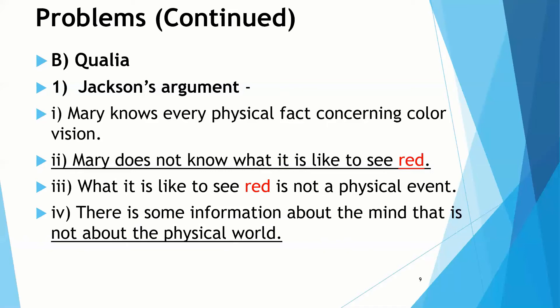So that means there's some information about the mind, in this case, what it's like to see red, that is not about the physical world. Because of that, we can conclude that physicalism broadly is incorrect. So functionalism that requires a physical medium is going to be incorrect, and the identity theory is going to be incorrect.